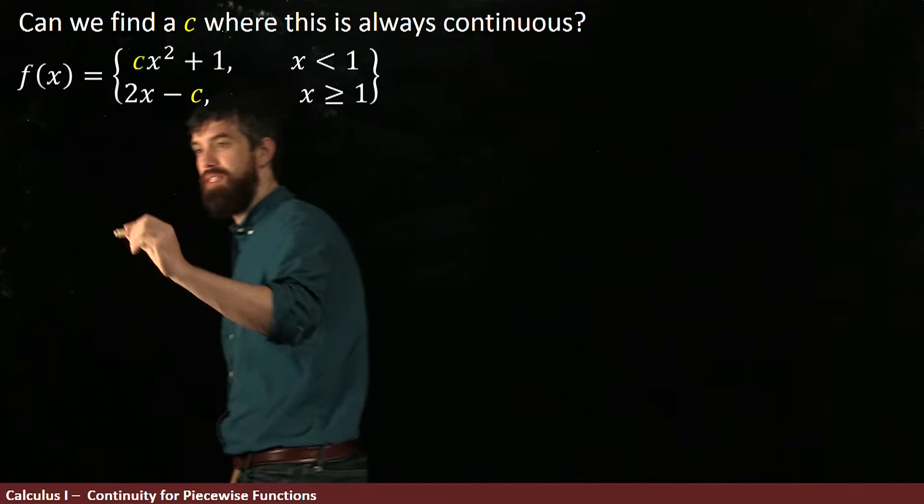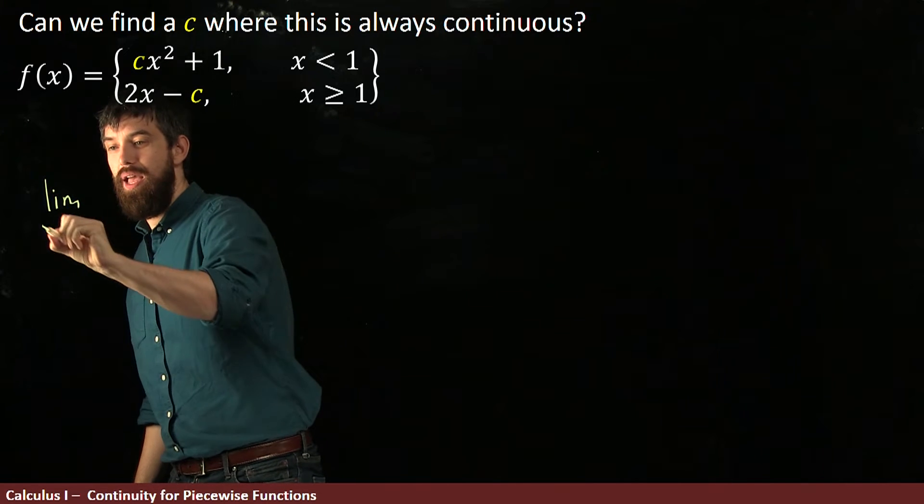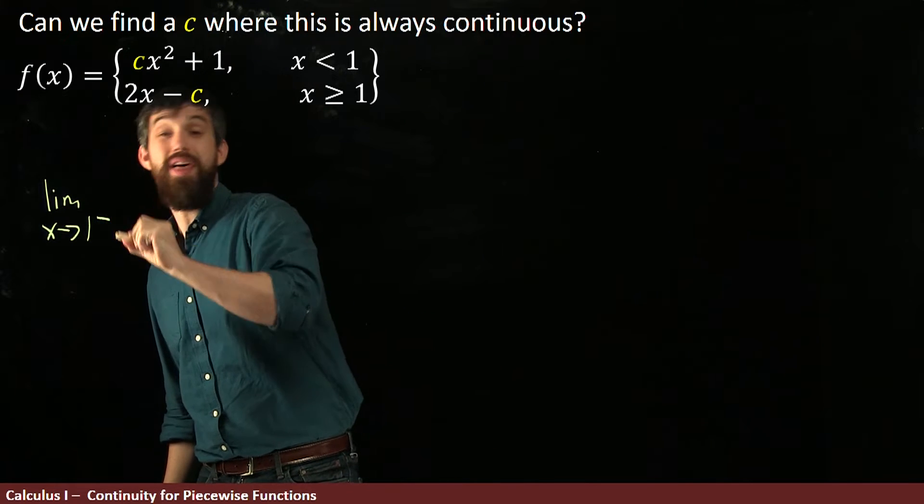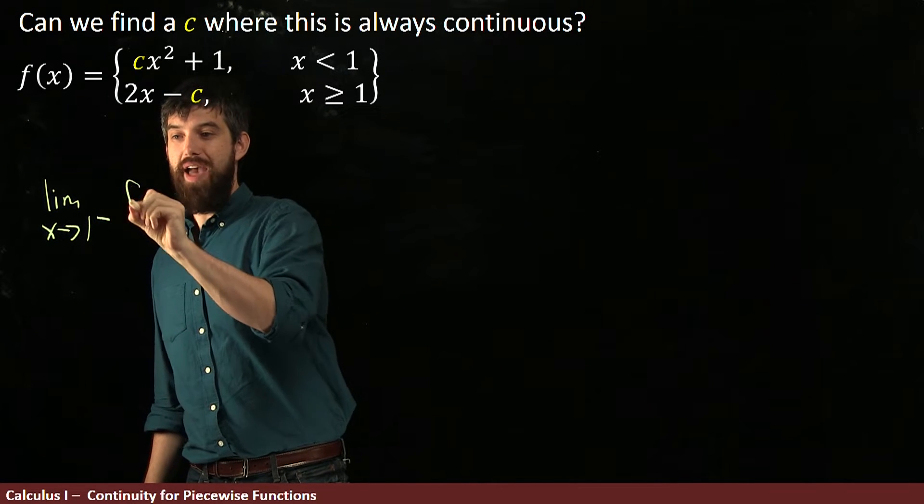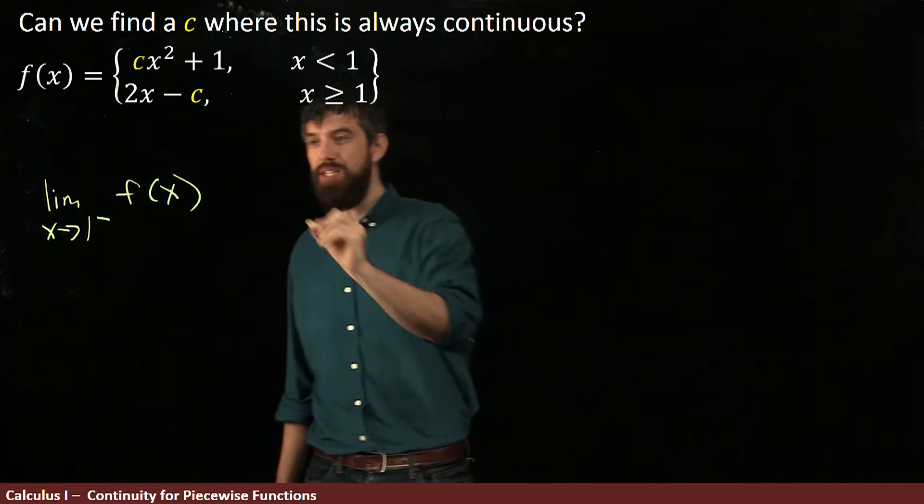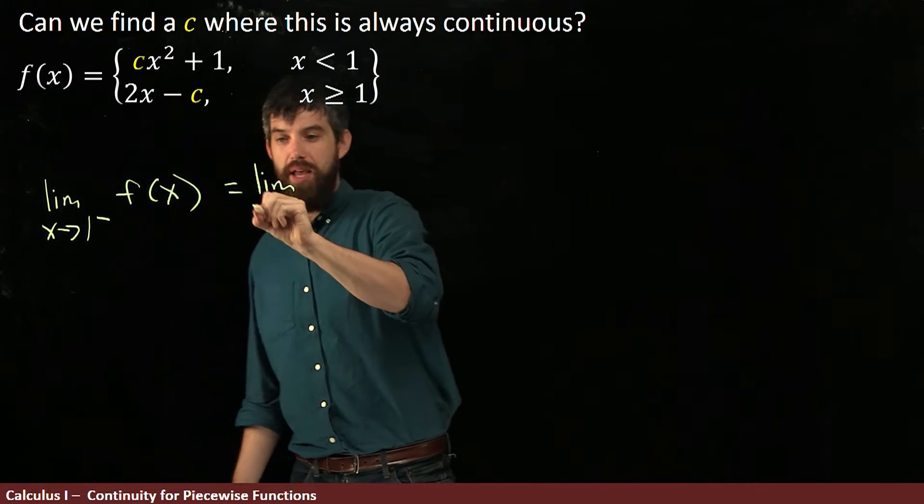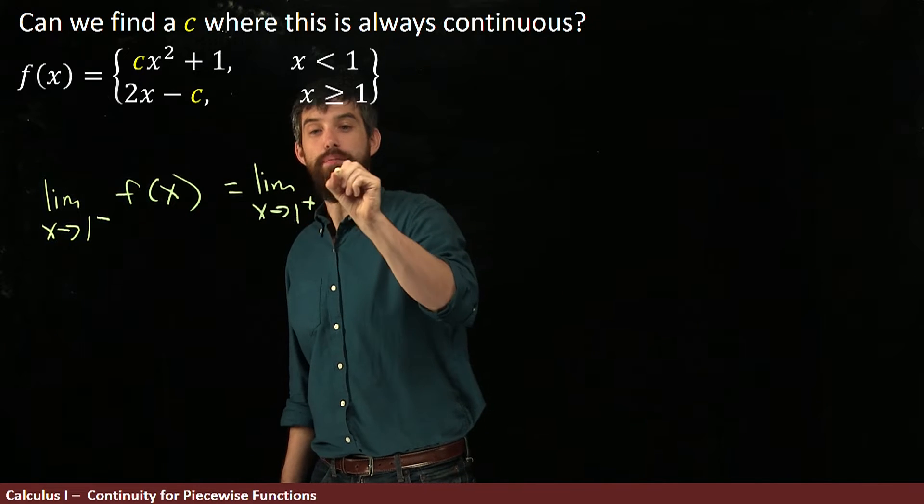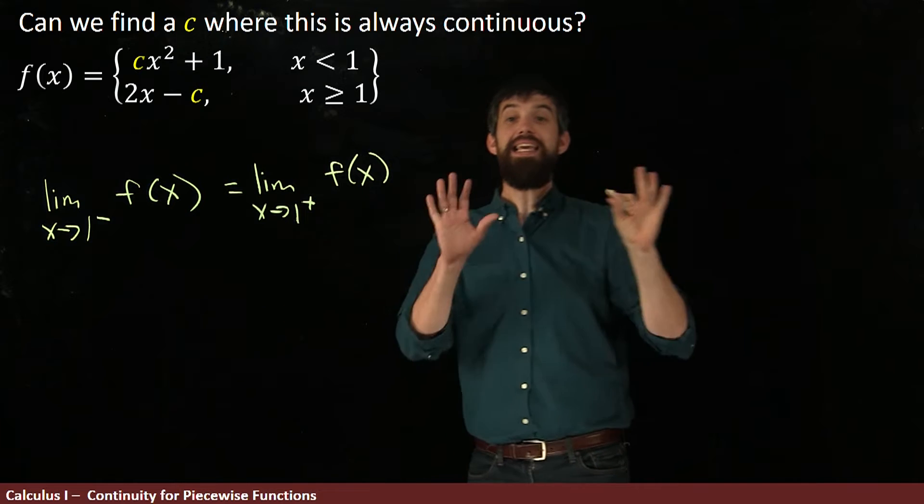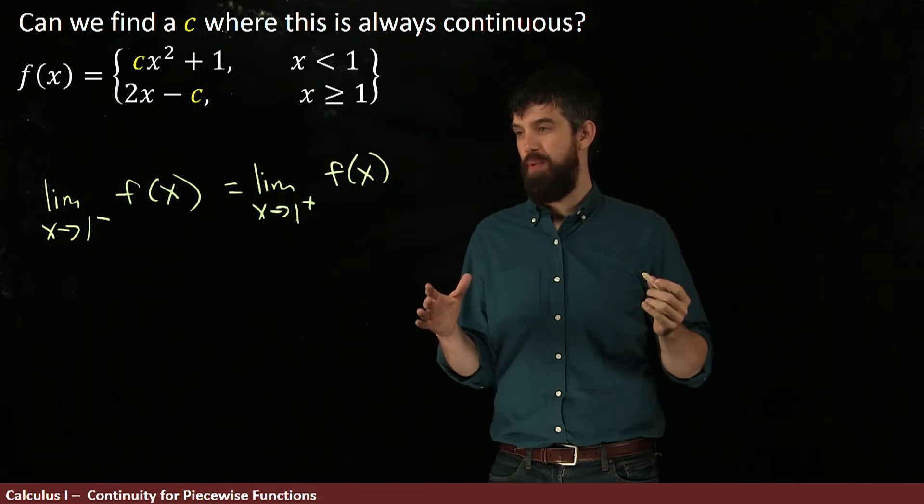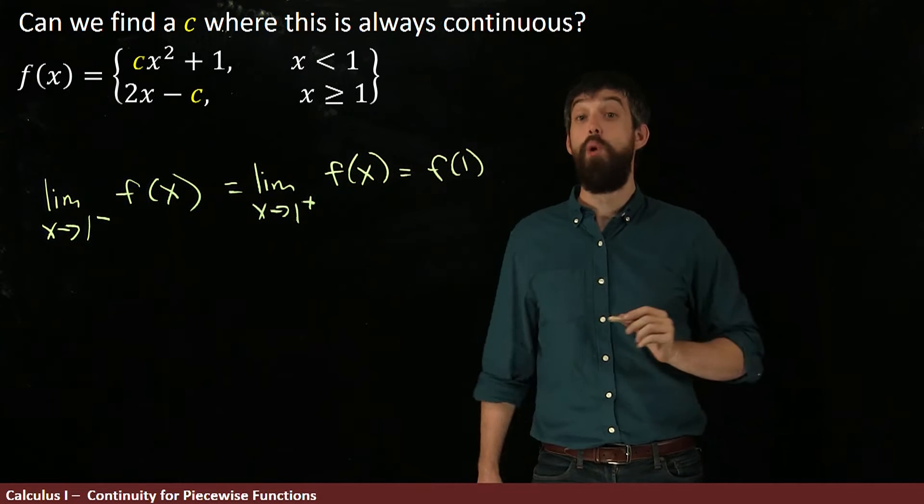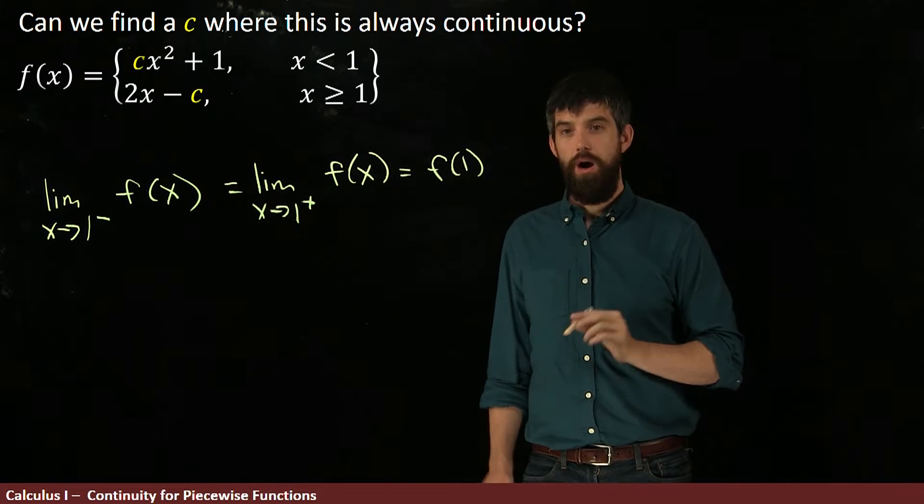Our goal is this. I want to say that the limit as x goes to the interesting spot, the 1, as x goes to 1 from, let's do the left first, of f of x. What I'm hoping is that this is going to be the same thing as the limit as x goes to 1 now from the right of my function f of x. So I need that to be the case if I have any hope for it to be continuous. And indeed, my third condition is that I want it to be equal to f of 1. That one's going to come more or less for free.